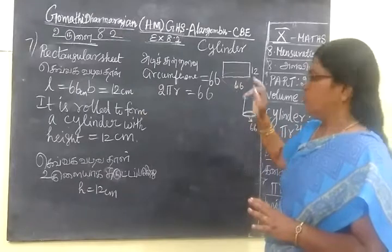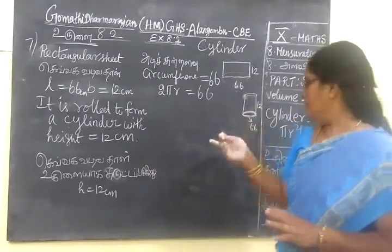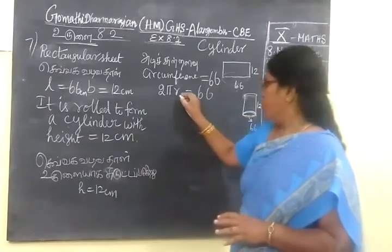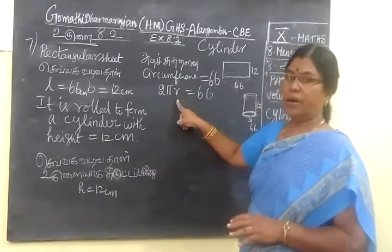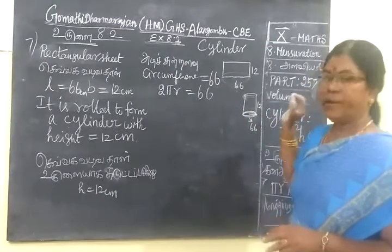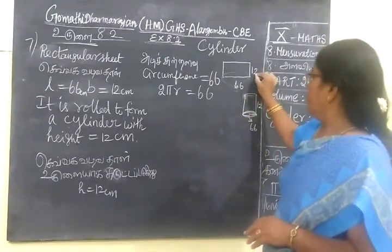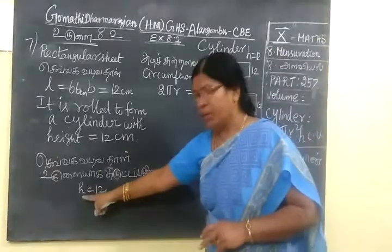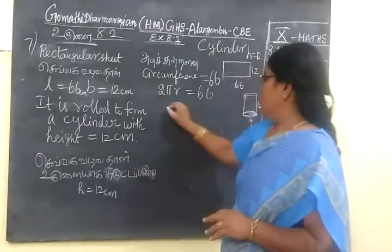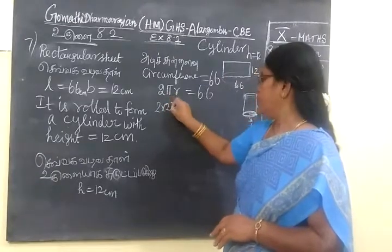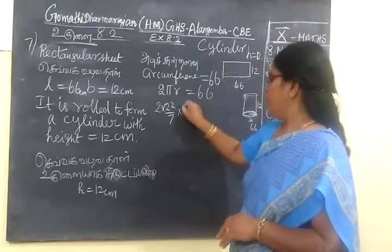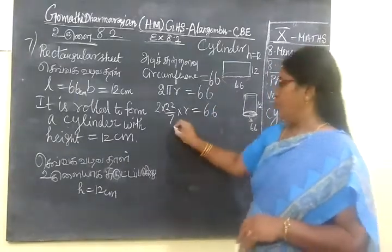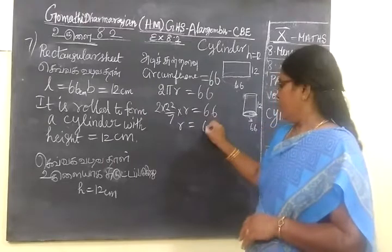Now, this is round. This is the circumference. So, circumference formula. So, we can find radius. R equal to 66.